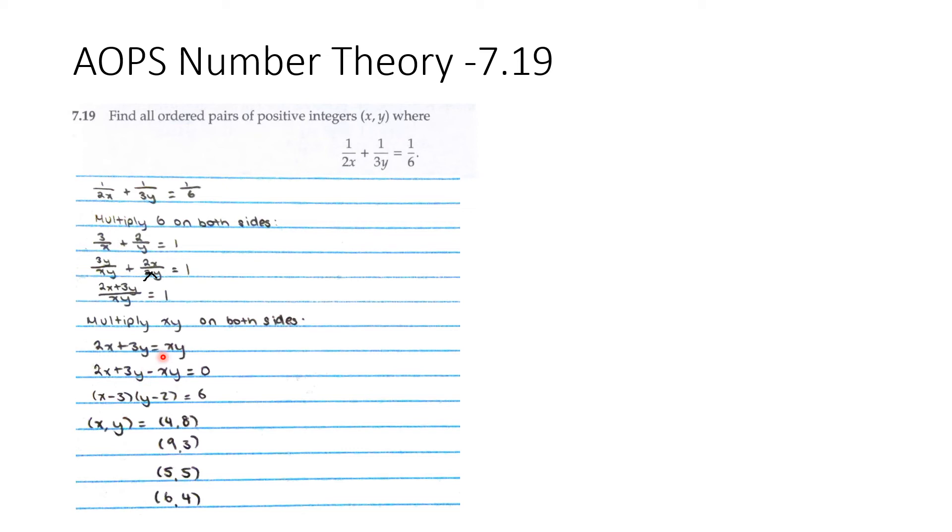So if we move xy to the left side, then 2x + 3y - xy = 0. And if we factor that, we get (x - 3)(y - 2) = 6.